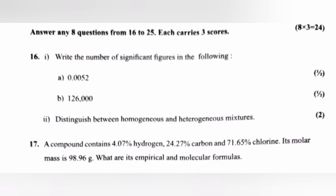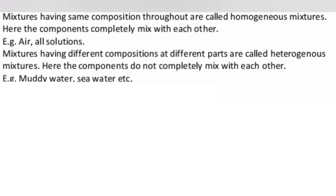Question 2: Distinguish between homogeneous and heterogeneous mixtures. Answer: Mixtures having the same composition throughout are called homogeneous mixtures. Here the components completely mix with each other. Examples: air, all solutions. Mixtures having different compositions at different parts are called heterogeneous mixtures.